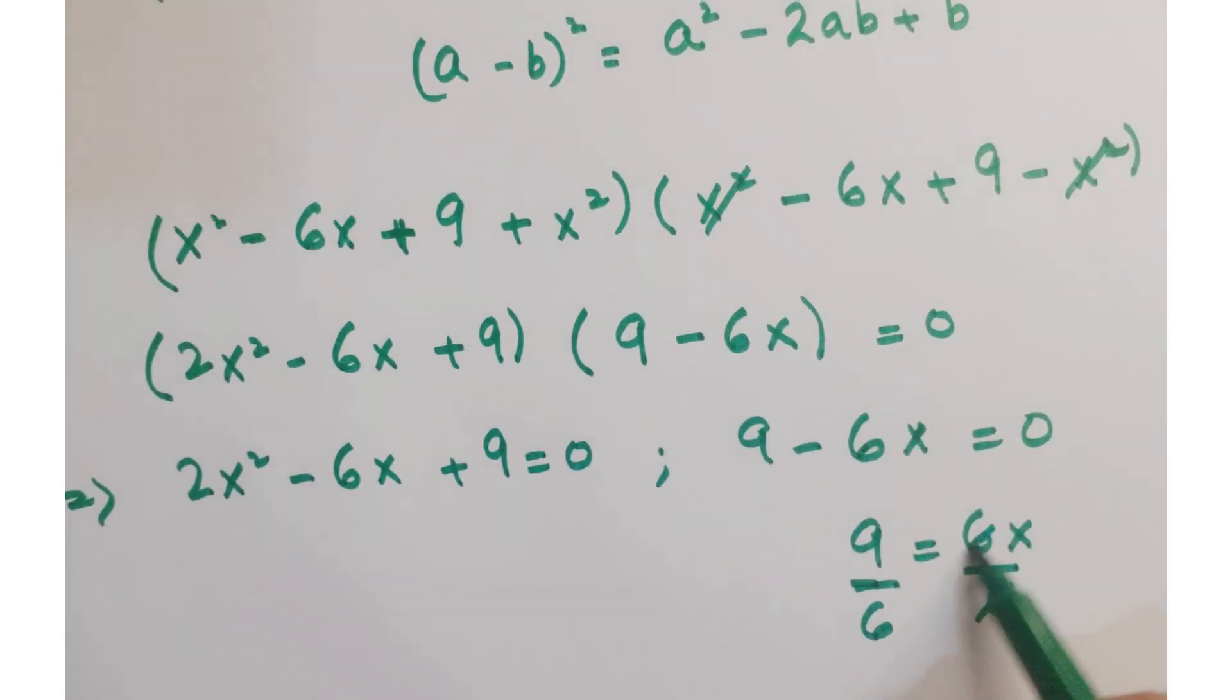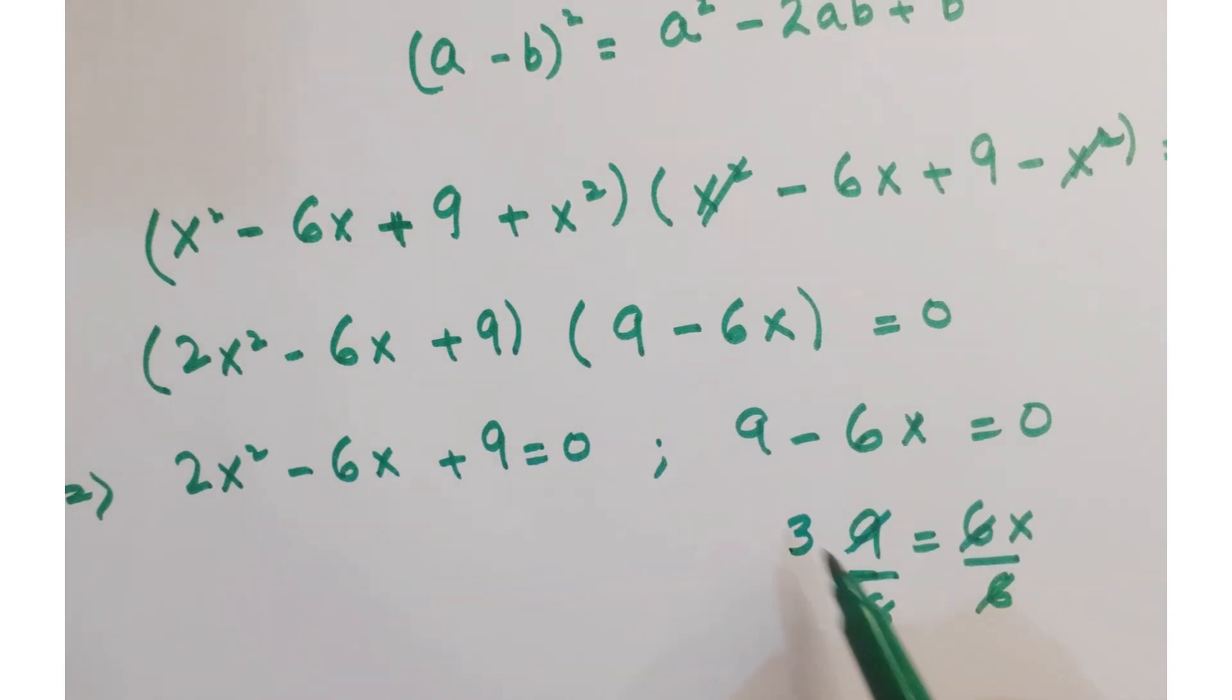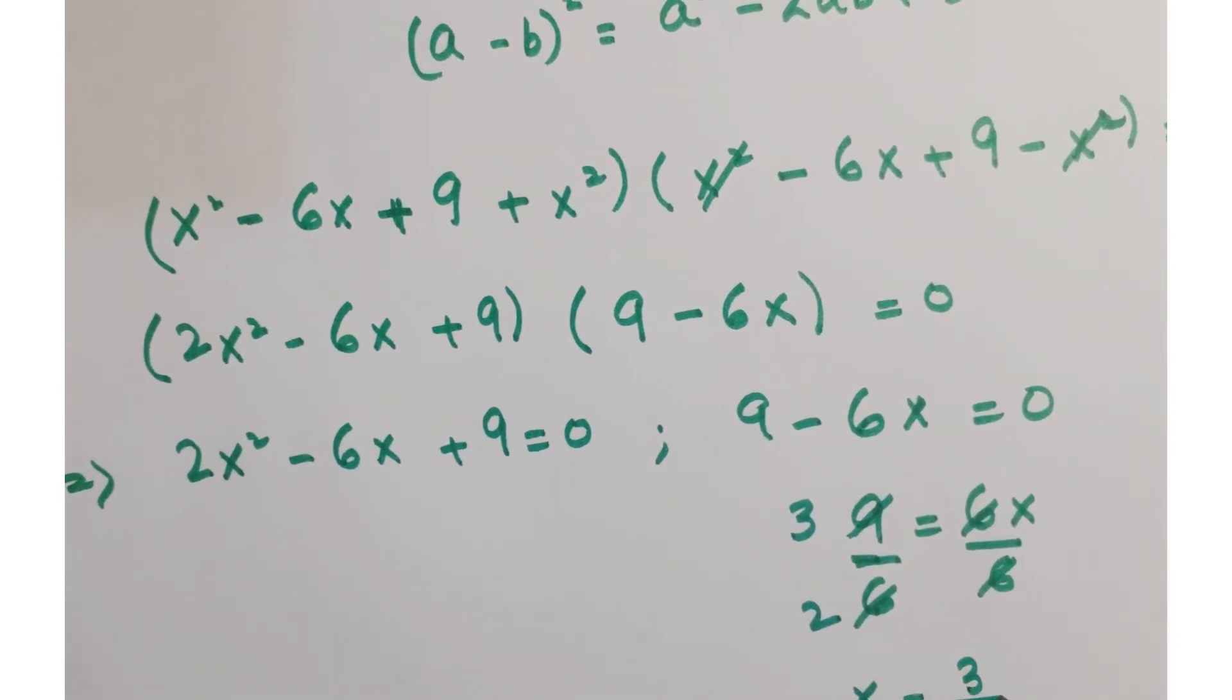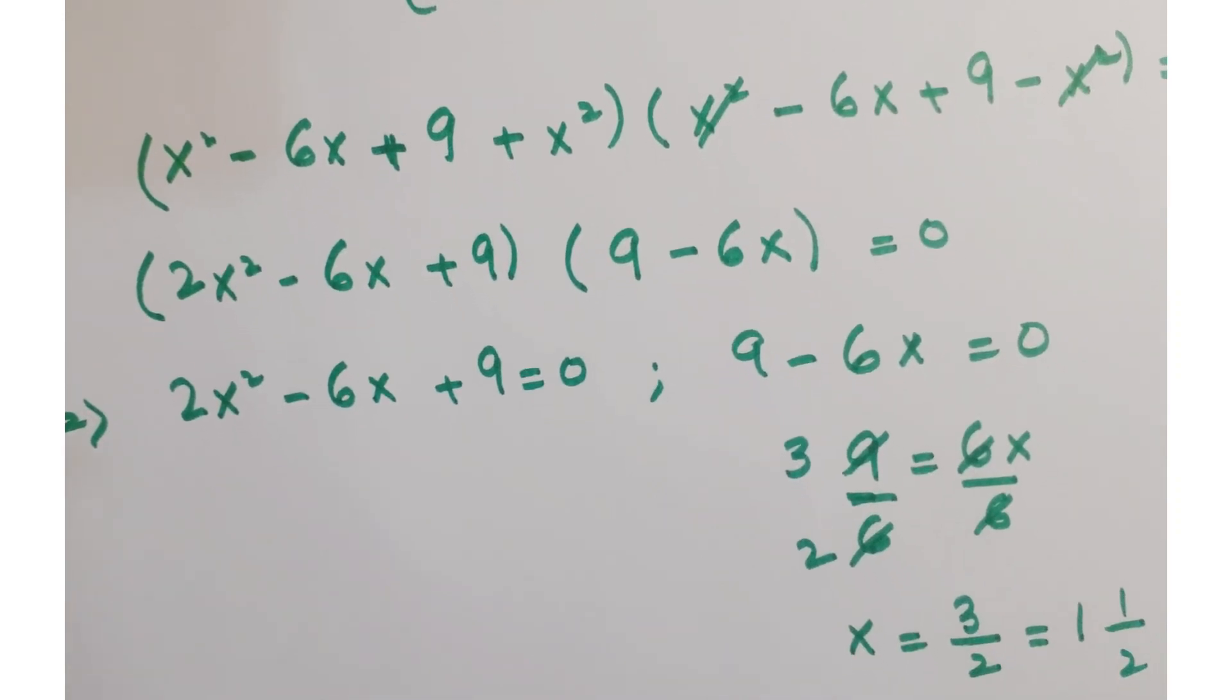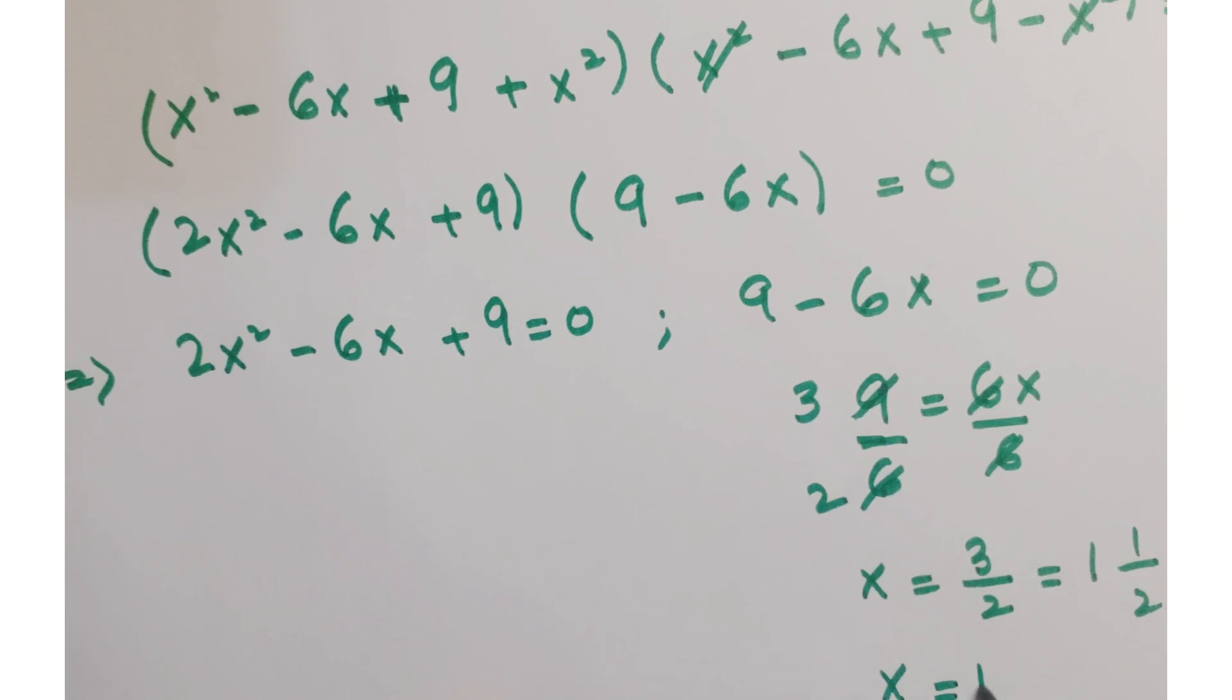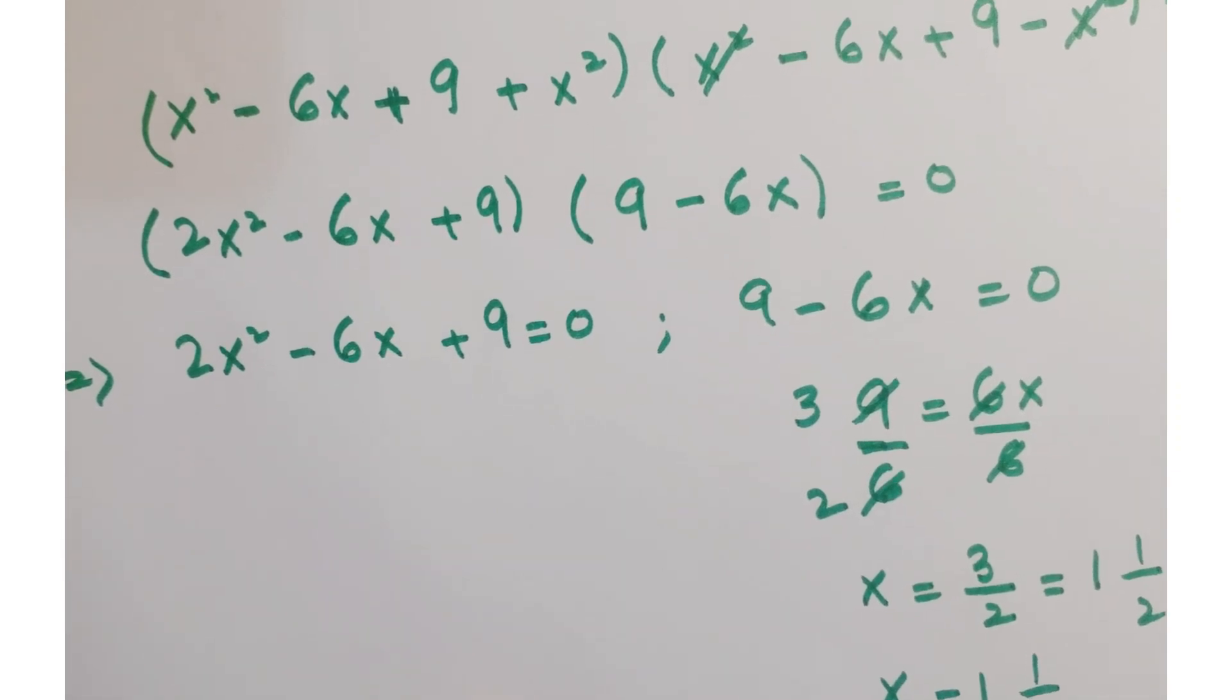you get these terms get cancelled. So you get x is equal to 3 upon 2 which is equal to 1 whole 1 upon 2. So this is one solution of x.